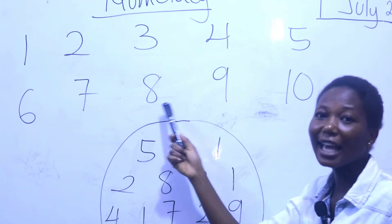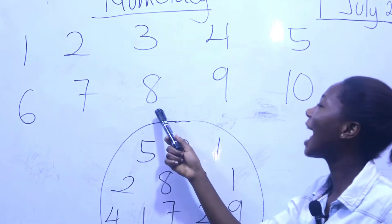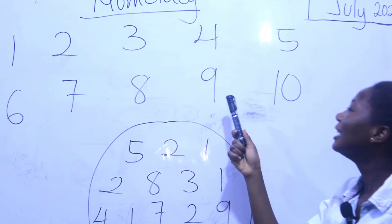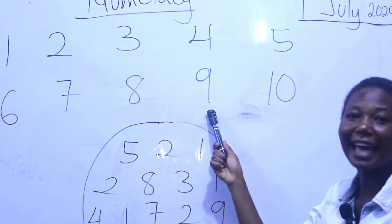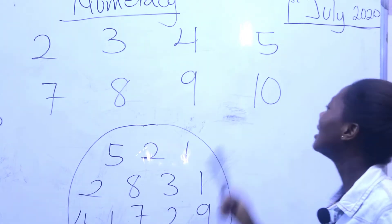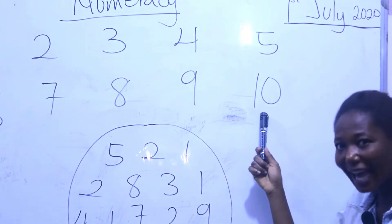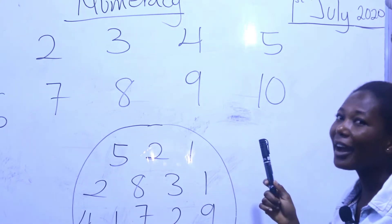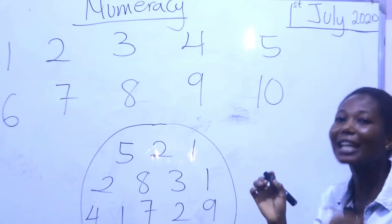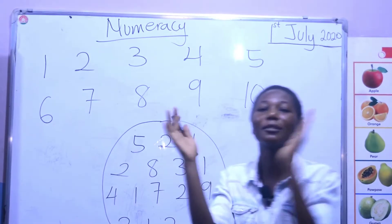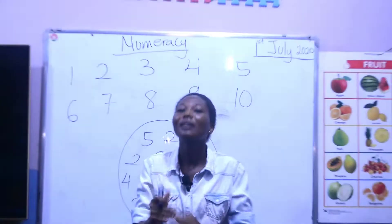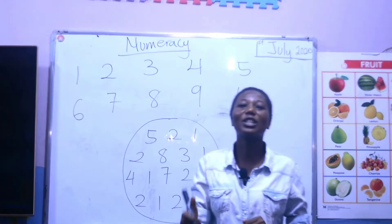Eight — again — eight — good. Nine — again — nine. Ten — very good — again — ten. Clap for yourselves! Very good. You guys are really doing well.